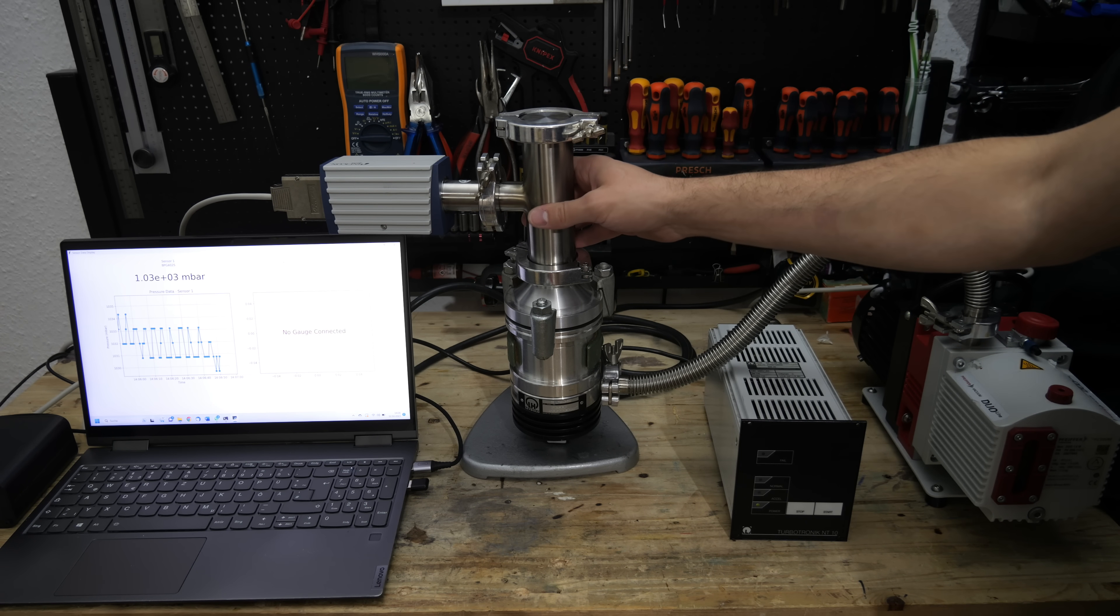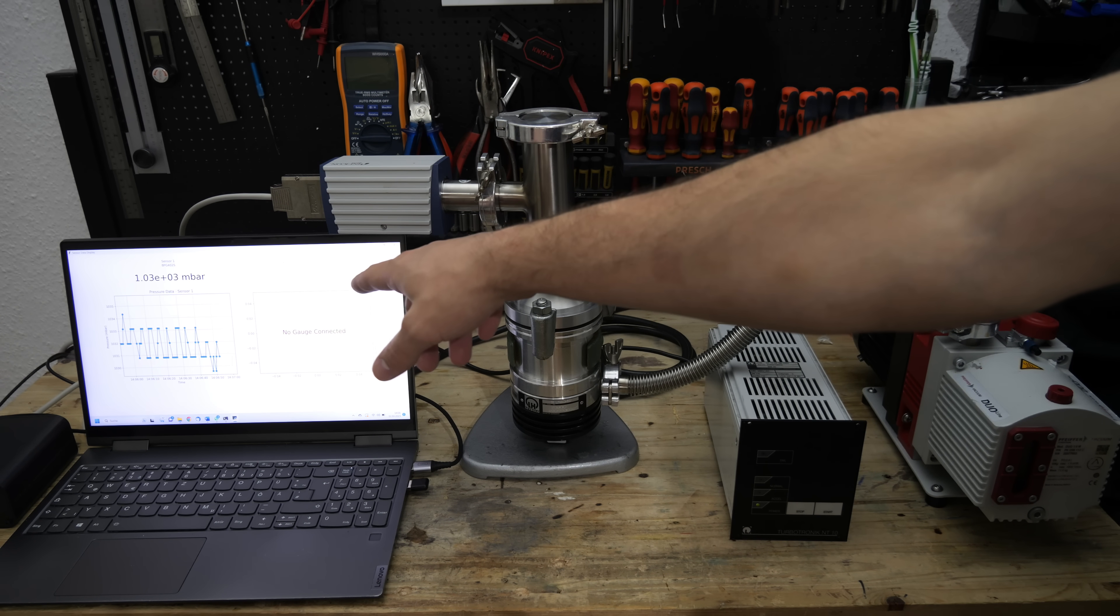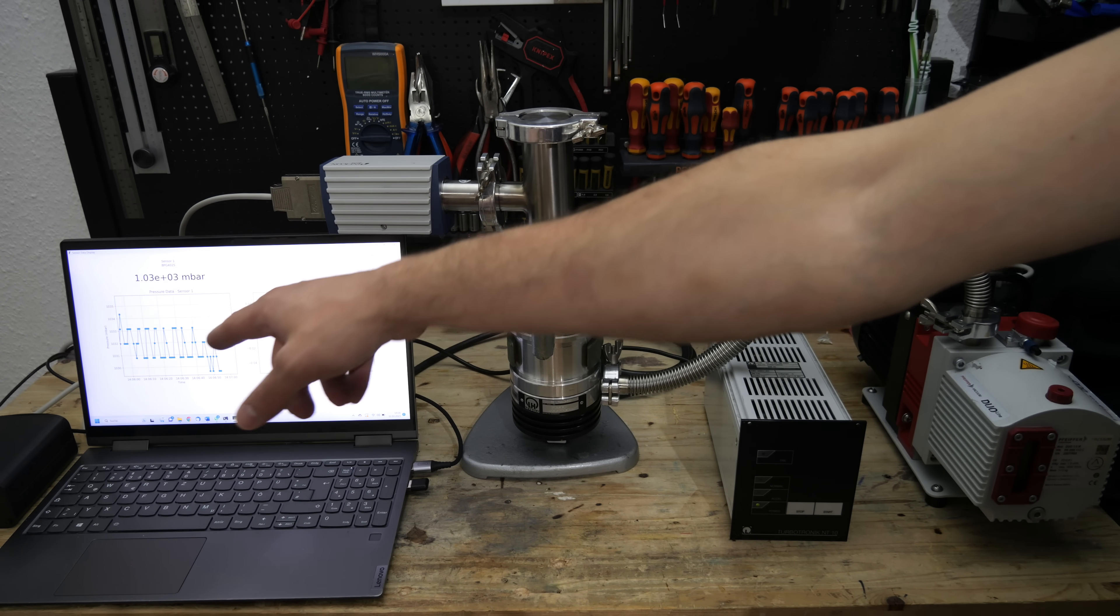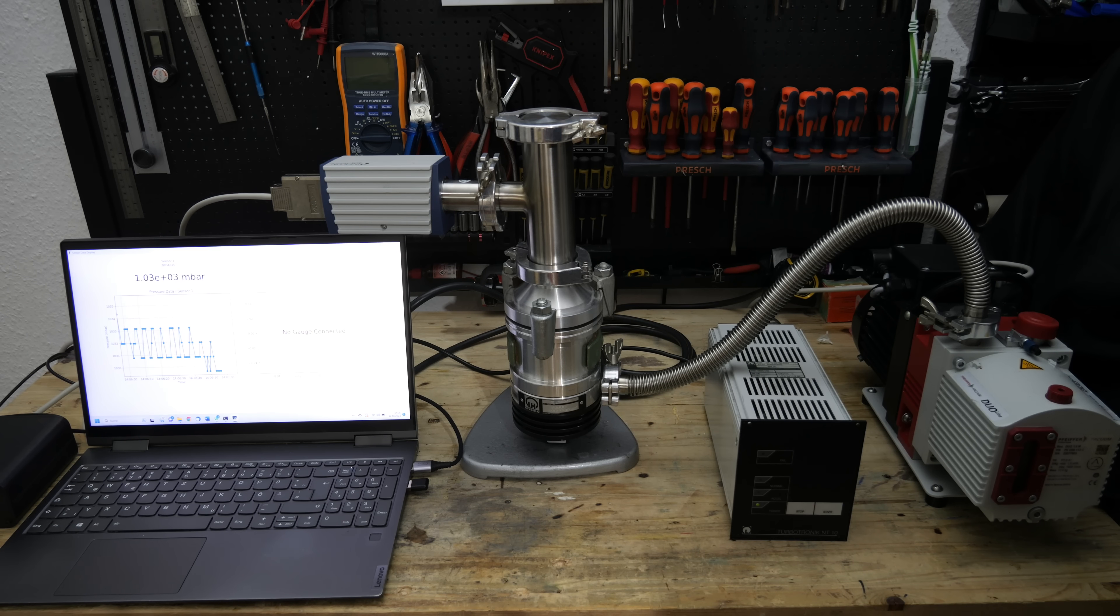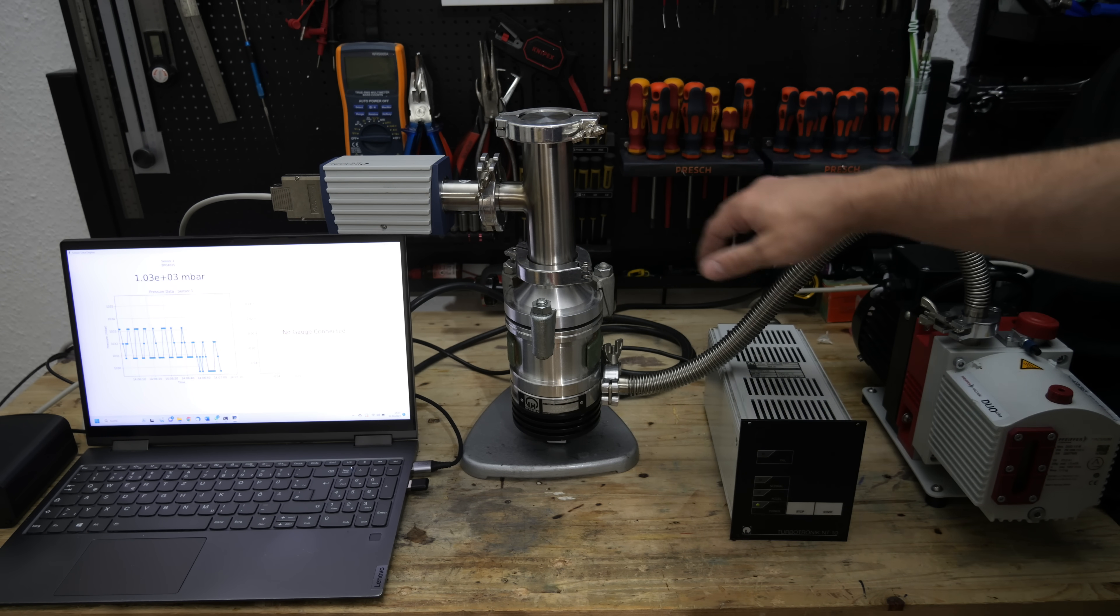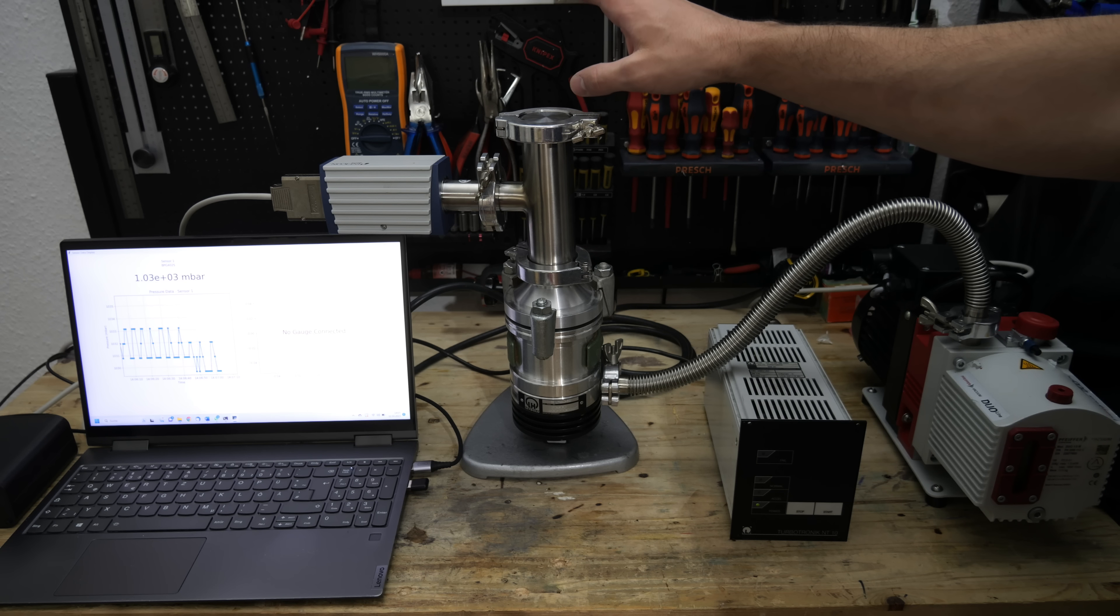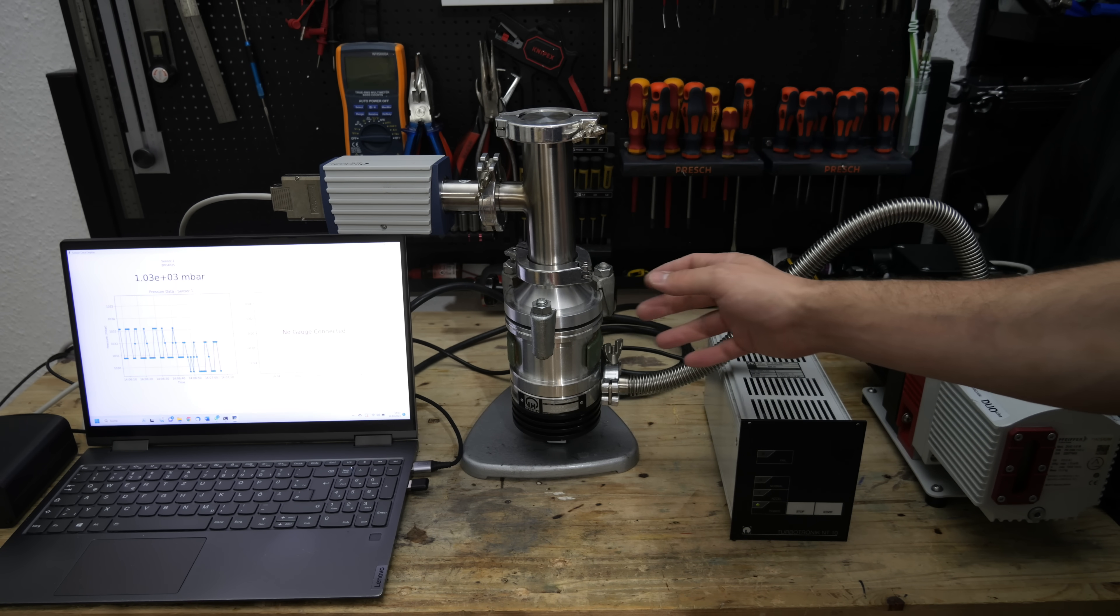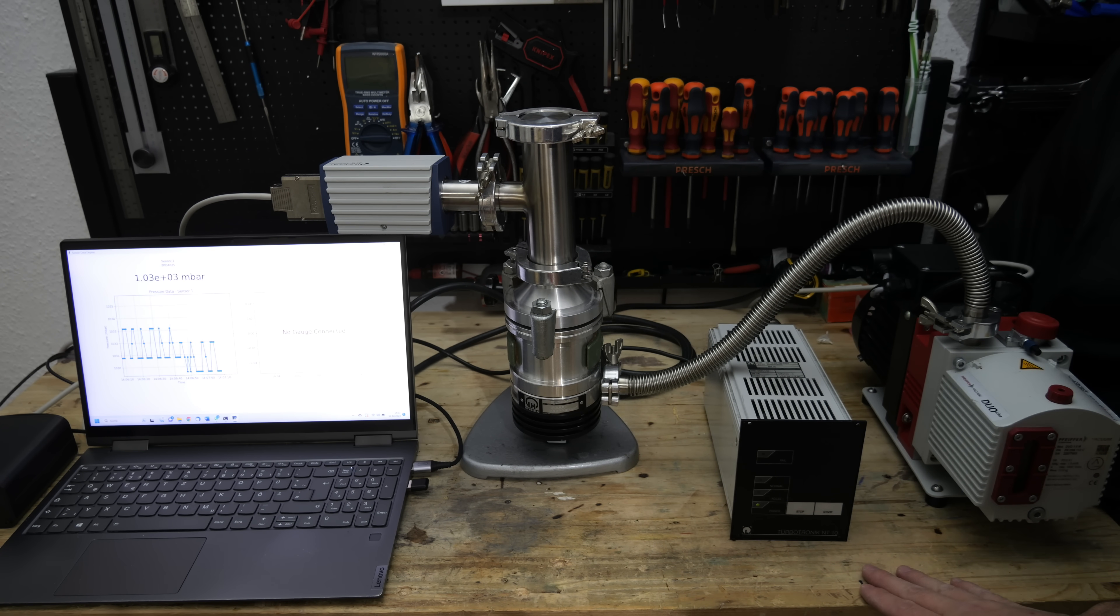I have a T-piece connected with my pressure gauge and I'm reading it out with my python script for my pressure gauge controller. And first we will turn on the roughing pump, let it run for a few minutes, and then turn on the turbomolecular pump, and look for weird noises and see what kind of pressures we can reach.